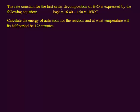The rate constant for the first order decomposition of water molecule is expressed by the given equation. The question asks us to calculate the energy of activation for the reaction, meaning Ea is unknown. To solve this, we apply the Arrhenius equation, which relates rate constant and energy of activation.